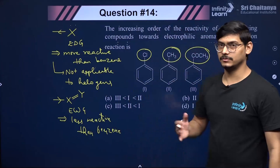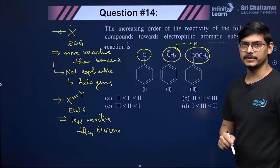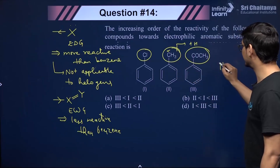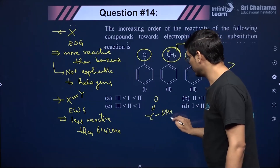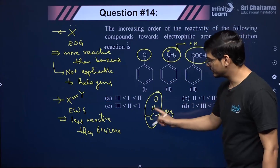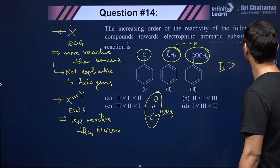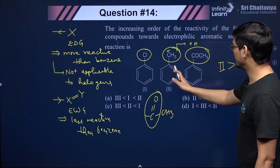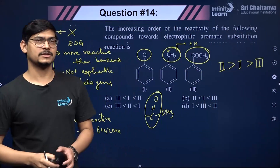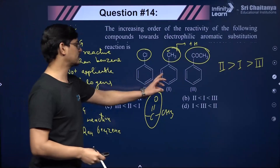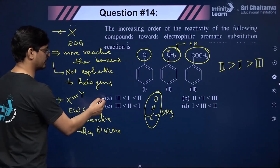Chlorobenzene is slightly less reactive than benzene due to the dominant −I effect of Cl. Toluene (methyl group) is slightly more reactive than benzene via hyperconjugation — most reactive. Acetophenone (COCH₃) is an electron-withdrawing group — least reactive. So the increasing order of reactivity towards EAS is: COCH₃-benzene < Cl-benzene < benzene < toluene, making toluene most reactive and acetophenone-substituted benzene least reactive.